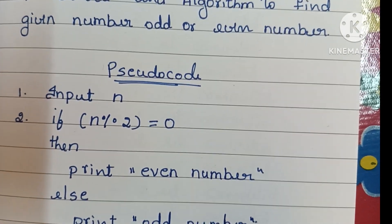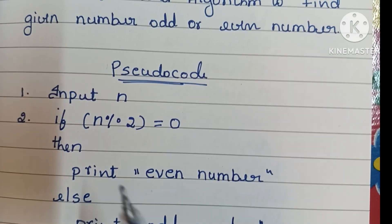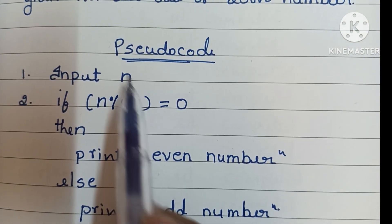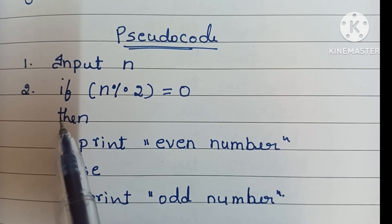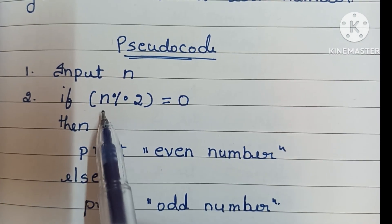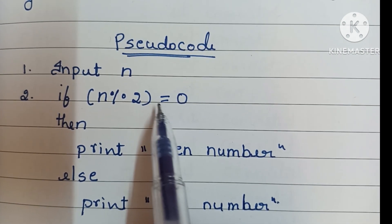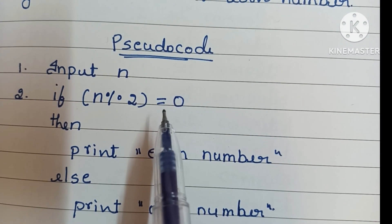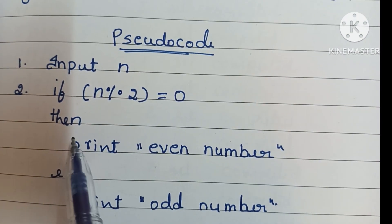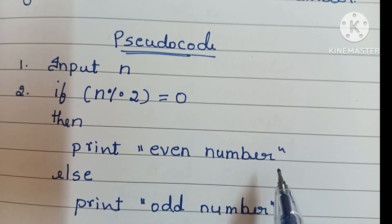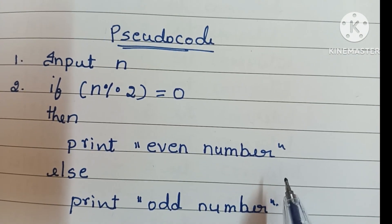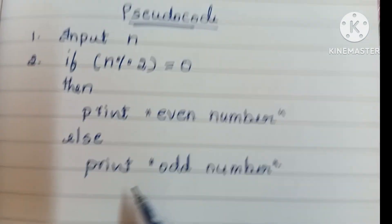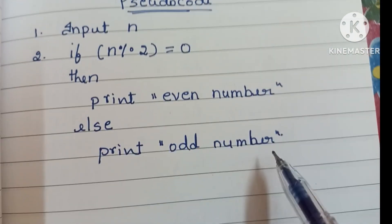So guys, this is the pseudocode to find whether a given number is odd or even. Initially we input a number n. Next, we check: if n modulo 2 is equal to 0, then we print even number. Else, if this condition is not true, then we print odd number.